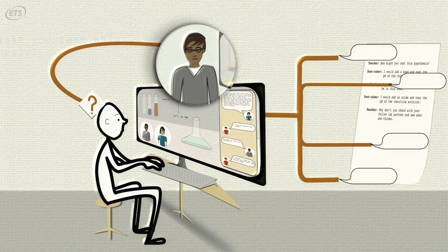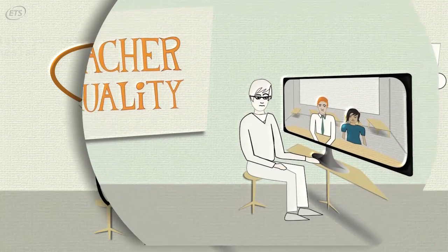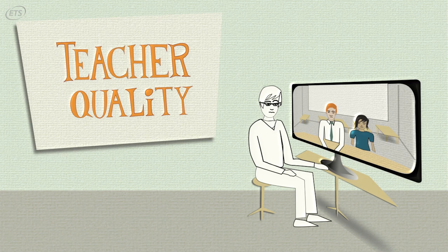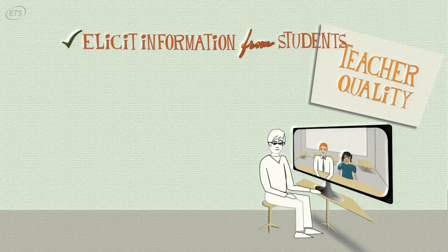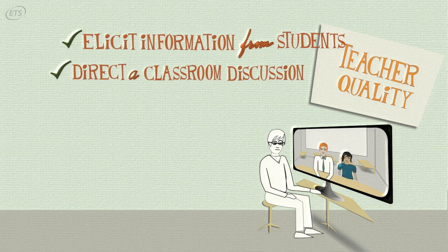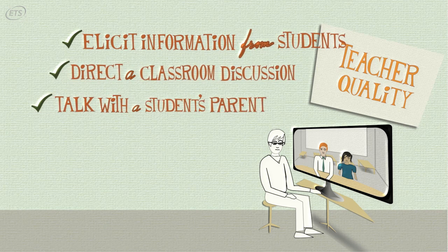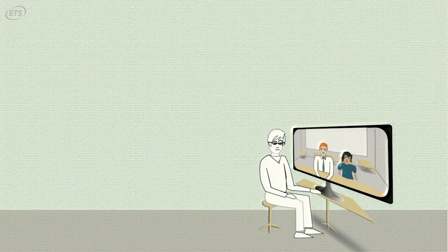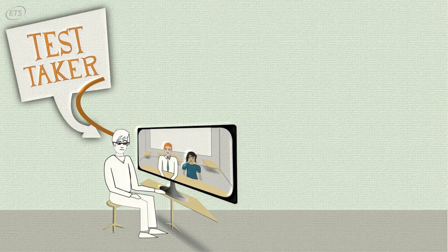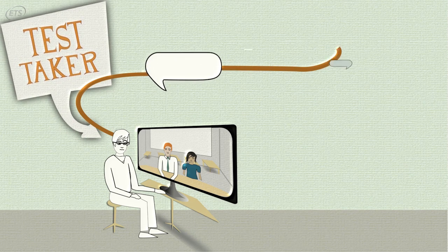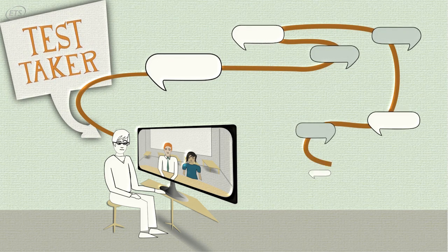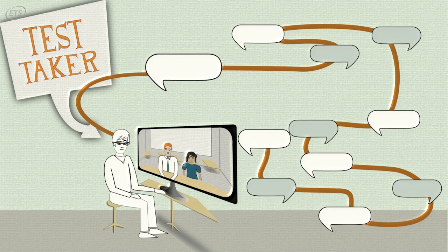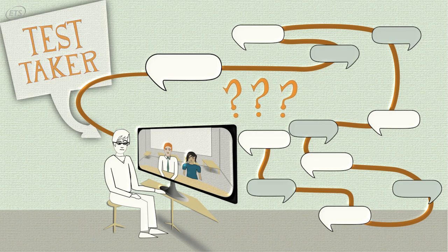In more expanded simulations, such as conversation-based assessments of teacher quality, a teacher's ability to elicit information from students, to direct a classroom discussion, or have a discussion with a student's parent could be assessed. In these simulations, the candidate teacher has the initiative in the conversation — they're the ones directing where to go — and so it becomes much harder to have an automated avatar because you don't know exactly what kind of questions the test taker is going to pose.